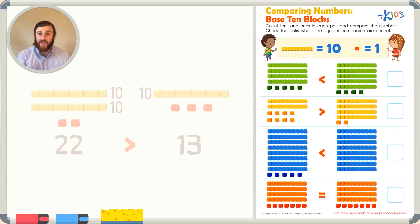Let's get started with our worksheet. Let's read the directions and start with the first problem. Comparing numbers, base 10 lines. Count 10s and 1s in each pair and compare the numbers. Check the pairs where the signs of comparison are correct. Okay, we have a nice little reminder off top reminding us about the longs are worth 10 and the cubes are worth 1. So let's get started by counting the base 10 blocks. Remember, we can count by tens if we see a long.